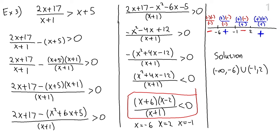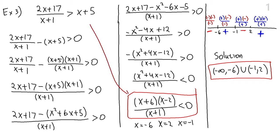The final solution is negative infinity to negative six, union negative one to two. So just like polynomial inequalities, if your rational inequality is not in factored form or one side is not zero, you must first put it in standard form: bring everything to one side, put it over a common denominator, factor both numerator and denominator, and then analyze the signs on the real line.